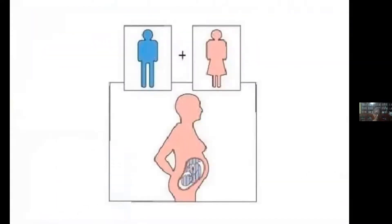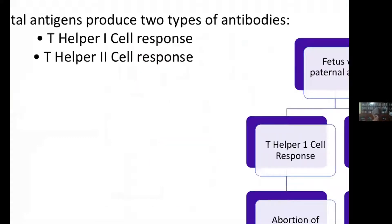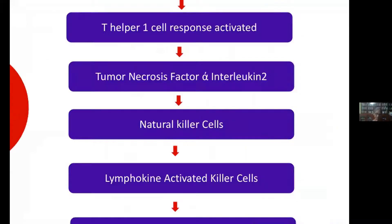Today I will be talking about the immunological cause of pregnancy loss and implantation failure. Pregnancy is a semigraft which carries 50% of the antigens of paternal origin, which is looked at as foreign. Immunomodulation becomes very important so the fetus is not rejected. We importantly need the T helper 2 cell response to be more predominant than T helper 1, because T helper 1 stimulation leads to abortion.